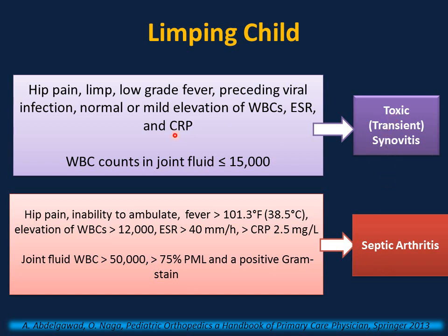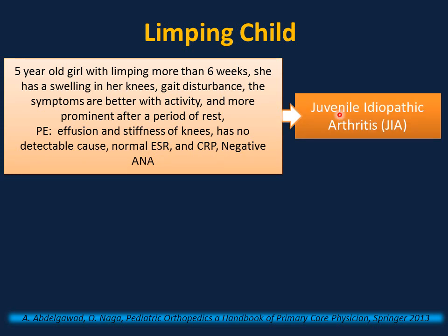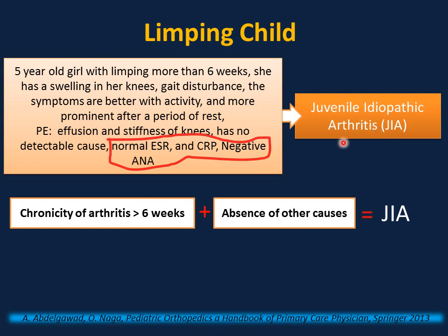This is a 5-year-old girl with limping for more than 6 weeks. She has swelling in her knees, gait disturbance, and symptoms that are better with activity and more prominent after a period of rest. Physical examination shows effusion and stiffness of the knees, no detectable cause, normal ESR and CRP, and negative ANA. The most likely diagnosis is juvenile idiopathic arthritis (JIA). The diagnosis is based on history and physical examination: chronicity of arthritis more than 6 weeks plus absence of other causes makes the diagnosis. You can safely rule out JIA in any child presenting with musculoskeletal pain with a normal physical examination — no joint swelling, no effusion, and normal range of motion — making the diagnosis very unlikely.